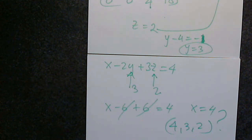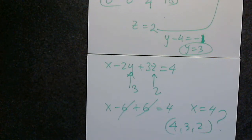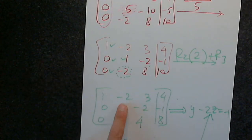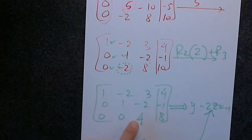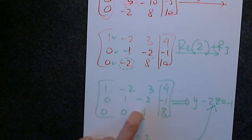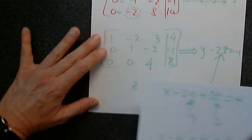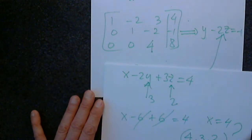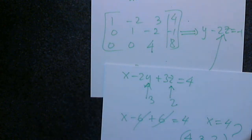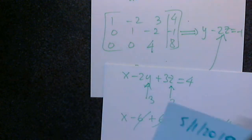If you prefer this method, I'm fine with it, though I think it's more work — because once you're getting zeros below and ones on the diagonal, why not get the zeros above as well? But if this method is better for you, it's better for me too.